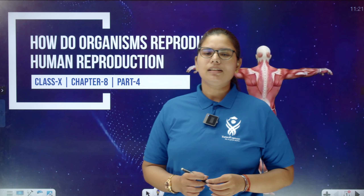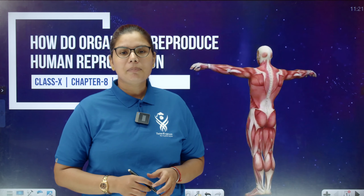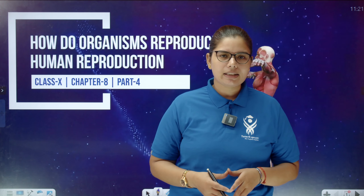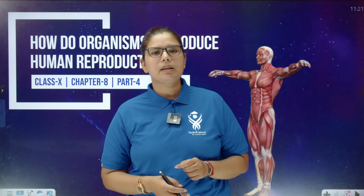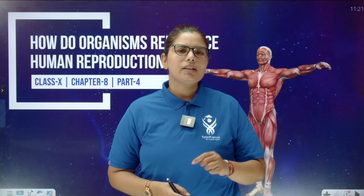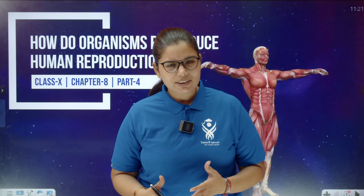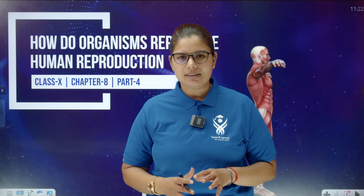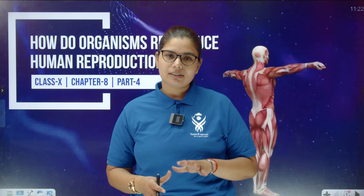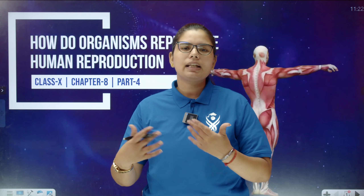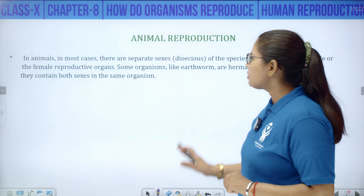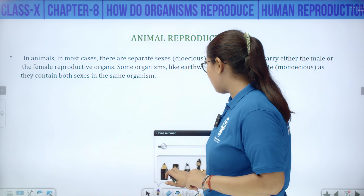Hello students, welcome back to the channel. I am in Part 4 of the chapter 'How Do Organisms Reproduce.' In this video I will discuss human reproduction, that is sexual reproduction in humans. We will discuss the reproductive parts of male and female humans, then the process of fertilization, and what happens if fertilization does not take place.